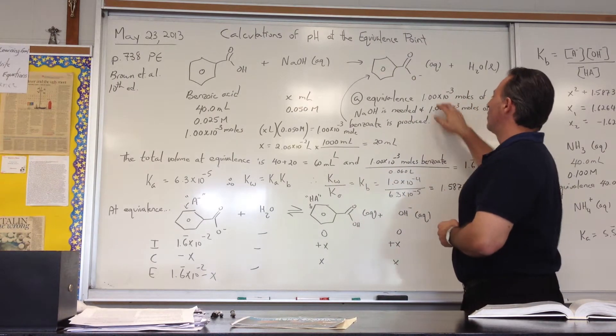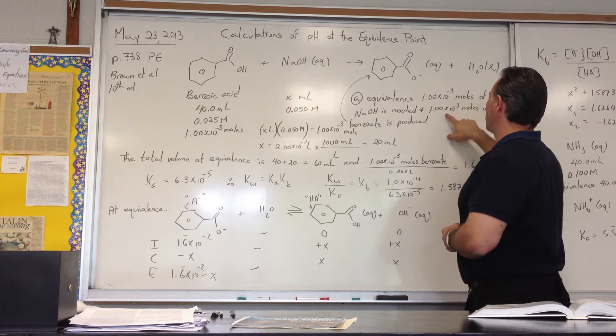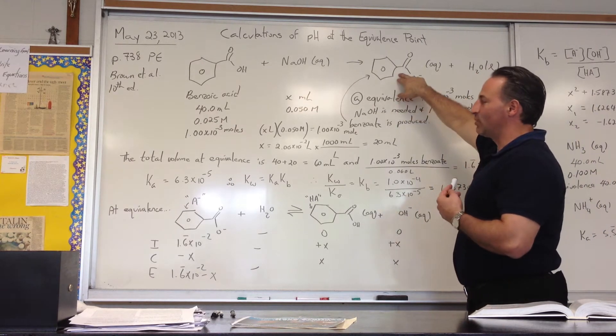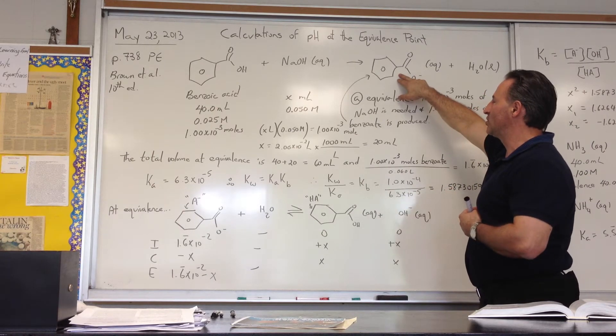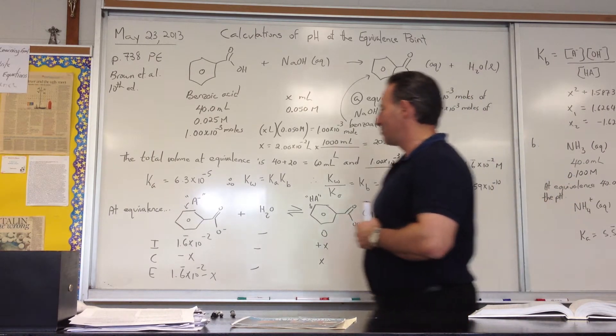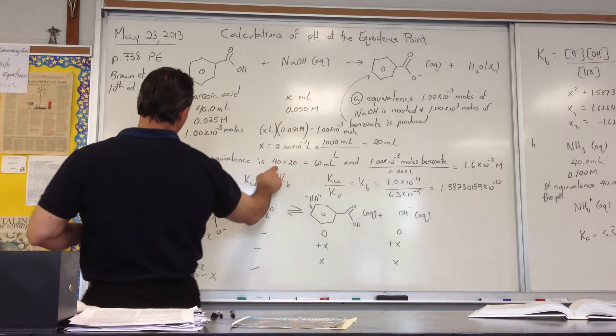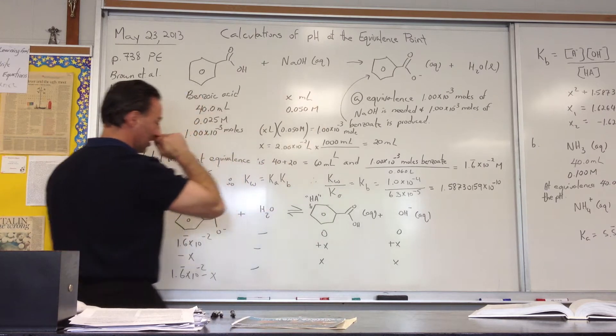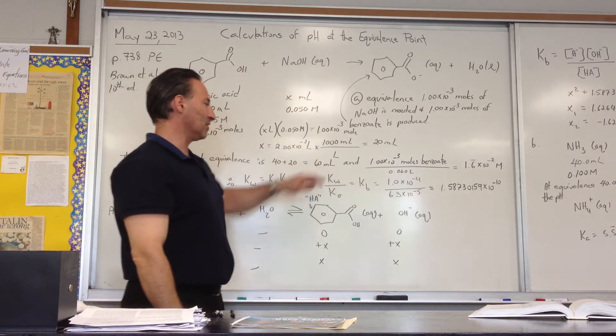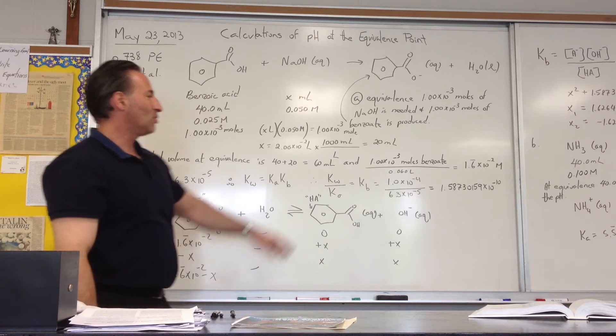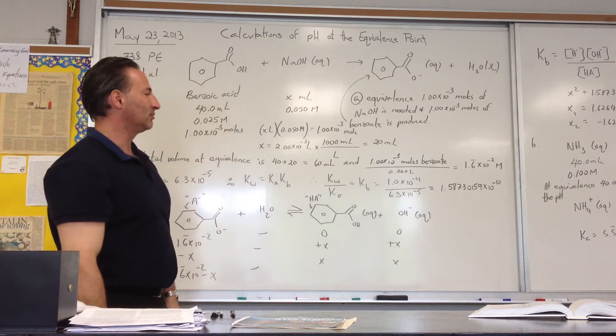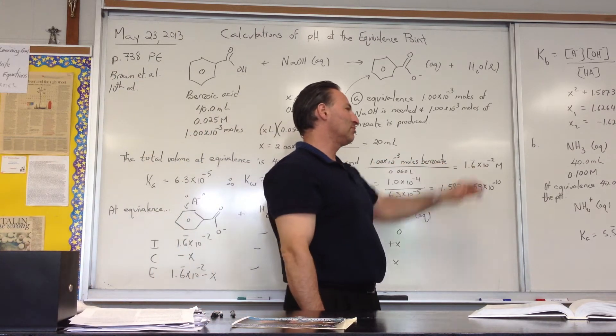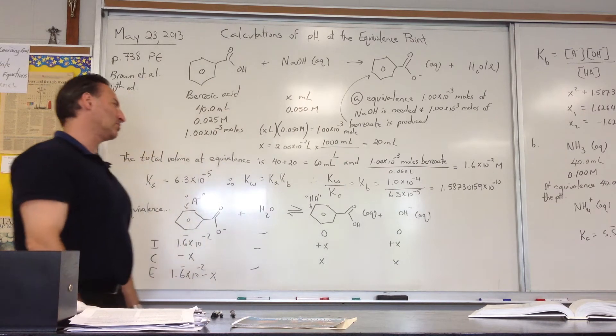So at equivalence, 1.0 times 10 to the minus 3 moles of NaOH is needed, and 1.0 times 10 to the minus 3 moles of benzoate is produced. So at equivalence, we have benzoate floating around. This is the conjugate base of benzoic acid. So the next step in our calculation is to find out the total volume. It's going to be 40 from the benzoic acid plus the 20 that's added from the titration. So the total volume of our solution is 60 mL, and it has 1.0 times 10 to the minus 3 moles of benzoate dissolved in it. If we divide that by the volume, we find out the concentration of benzoate is 1.6 recurring times 10 to the minus 2 molar.